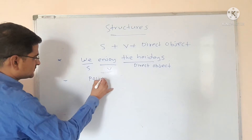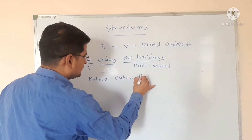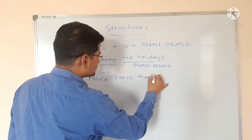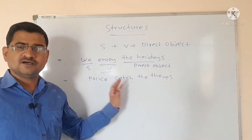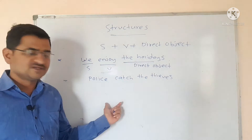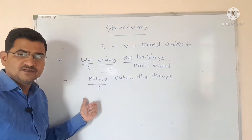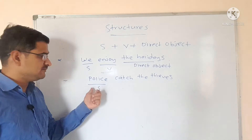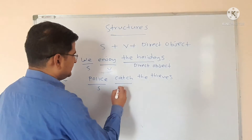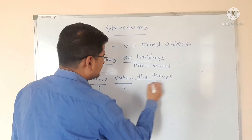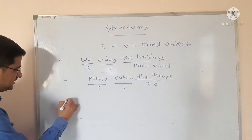Police catch the thieves. In this particular statement, 'police' is an example of a subject because it is the doer of the action. 'Catch' is the verb, and 'the thieves' is the direct object. Another example.